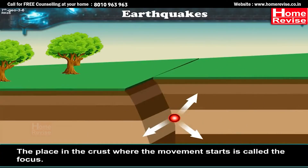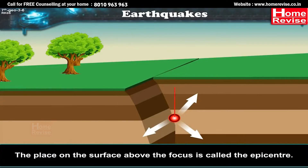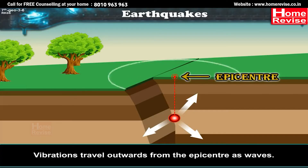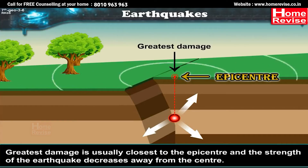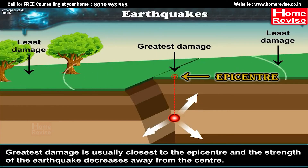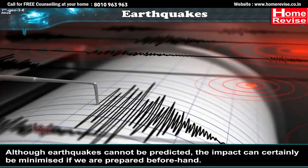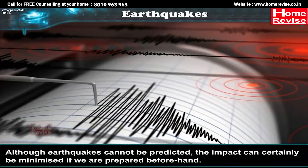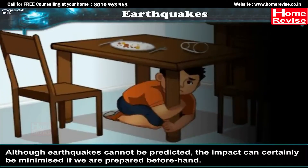The place in the crust where the movement starts is called the focus. The place on the surface above the focus is called the epicenter. Vibrations travel outwards from the epicenter as waves. Greatest damage is usually closest to the epicenter, and the strength of the earthquake decreases away from the center. Although earthquakes cannot be predicted, the impact can certainly be minimized if we are prepared beforehand.